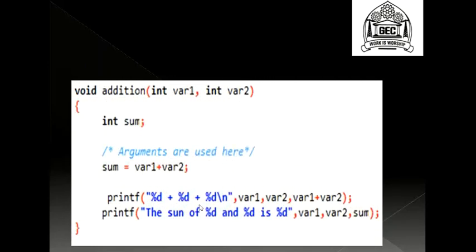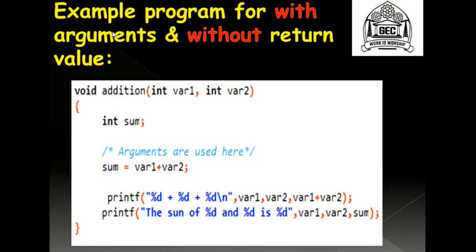Here we have a function with a void return type, so you cannot return something. However, you will have to tell the main program that you have performed the addition of two numbers. This is a program for 'with arguments and without return value.' To tell the user you computed the sum of what came in through the formal parameters, you use display messages via printf statements. The local variable declaration is int sum, and you compute sum equals num1 plus num2.